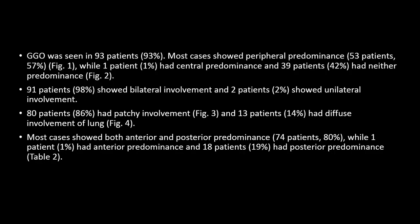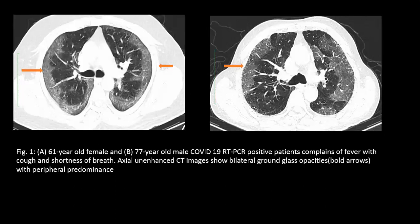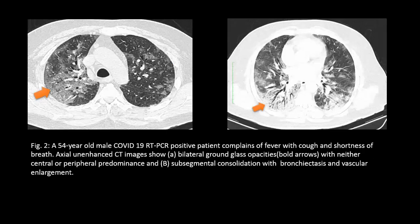GGO was seen in 93% of patients. Most GGOs were peripheral; less commonly they were central, and sometimes neither peripheral nor central. 91% of patients showed bilateral involvement, while 2% showed only unilateral involvement. In this chest CT axial cut, we can see peripheral predominant GGOs in both lungs. In another CT axial cut, the GGOs are neither peripheral nor central, and bronchiectatic changes can also be seen.